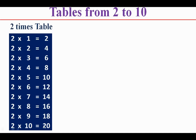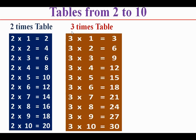3 times table: 3 1s are 3, 3 2s are 6, 3 3s are 9, 3 4s are 12, 3 5s are 15, 3 6s are 18, 3 7s are 21, 3 8s are 24, 3 9s are 27, 3 10s are 30.